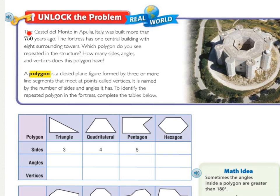Unlock the Problem. The Castel del Monte in Apulia, Italy was built more than 750 years ago. The fortress has one central building with eight surrounding towers. Which polygon do you see repeated in the structure? How many sides, angles, and vertices does this polygon have? Press pause, squiggle underline what you're being asked to find, and circle any information that is important to it.